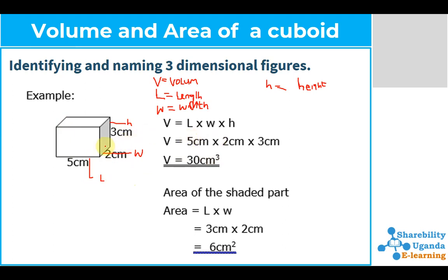We can see that our length is 5 centimeters, our width is 2 centimeters, and our height is 3 centimeters. Substituting those values: volume equals length times width times height, so 5 times 2 times 3. That gives us 30, and the SI unit is centimeters cubed.